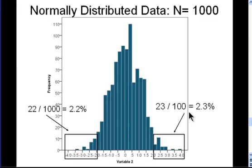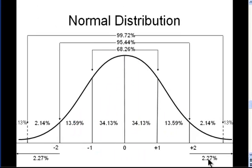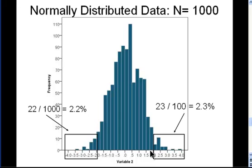It's supposed to be 2.3% on each side of the tail, and what we get is 2.2% and 2.3%.